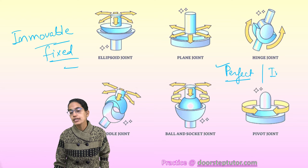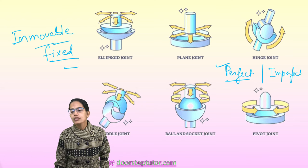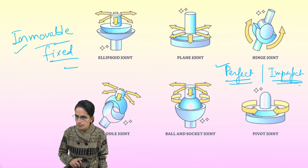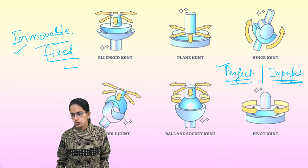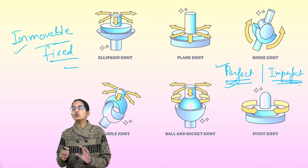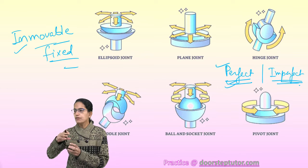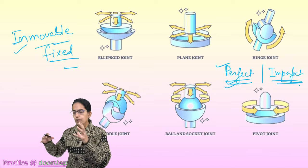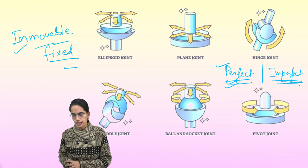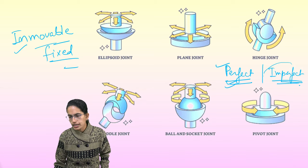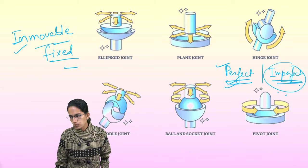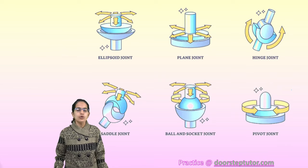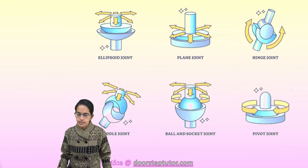Joints can also be classified as perfect joints and imperfect joints. Perfect joints are those enclosed within the synovial capsule and supported by ligaments — good examples are the hip joint and shoulder joint. Imperfect joints are where ligaments and the synovial capsule are absent and the cartilage tips directly contact, based on degree of movement.